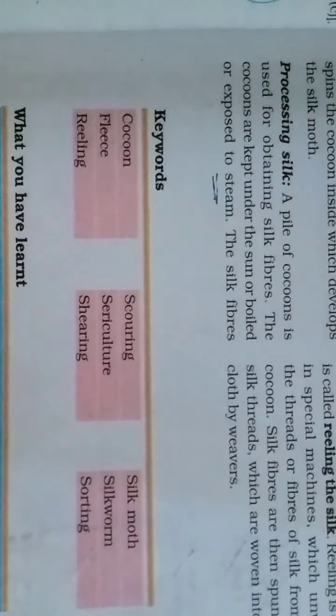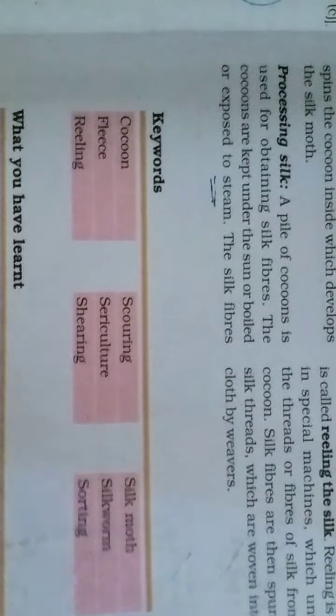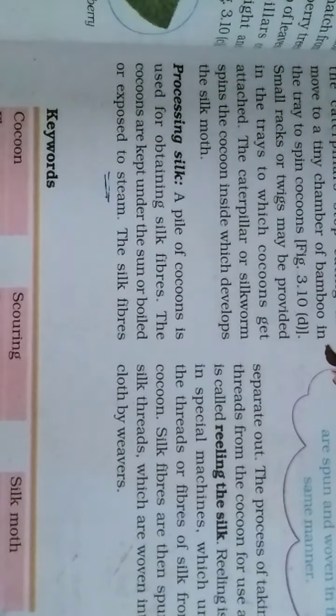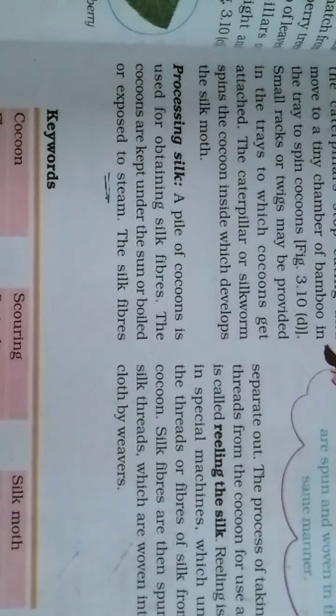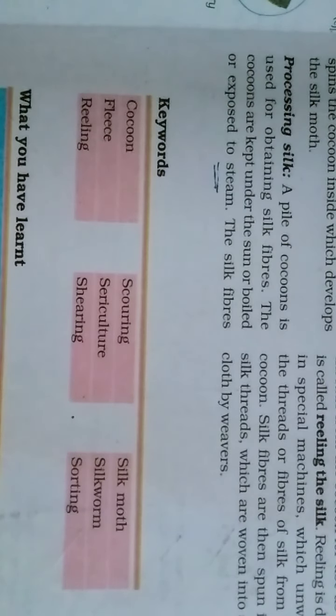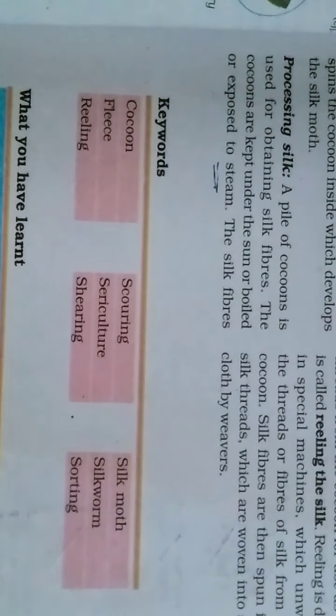Now let us discuss the keywords. The first keyword is cocoon. The cocoon is the covering that the caterpillar creates from protein secreted by it; it becomes hard due to exposure to air.